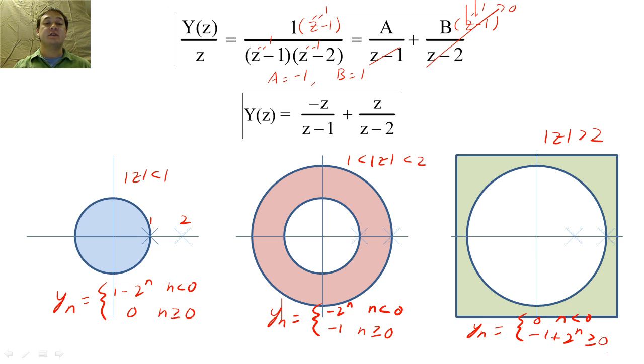From this exercise, we see that we cannot invert the Z transform unless we are told the ROC.